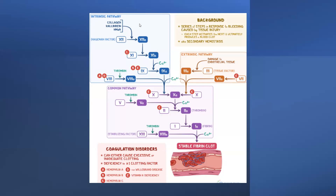Factor XIIa acts on factor XI, converting it to XIa. Factor XIa combines with calcium, converting factor IX to IXa. Factor IXa acts on factor X. Meanwhile, thrombin acts on factor VIII, converting it to VIIIa, which combines with factor X, converting it to Xa. This series of steps in response to bleeding, caused by tissue injury, activates each subsequent step and ultimately produces a blood clot — secondary hemostasis.